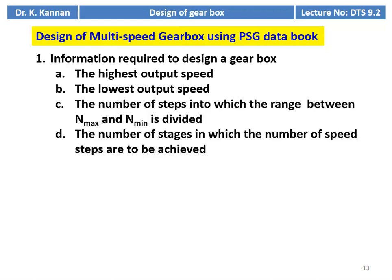We will discuss the procedure. The information required for the design of a gearbox includes: the highest output speed required, the lowest output speed, the number of steps into which the range between maximum and minimum speed is divided, and the number of stages in which that number of speeds is achieved — for example, 2×2 or 3×2. Essentially, highest speed, lowest speed, and number of steps are the basic information required for designing a gearbox.